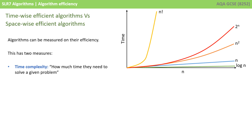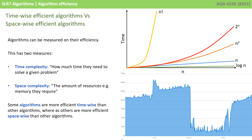When we talk about algorithm efficiency, especially beyond GCSE, we can measure efficiency in two ways. We have time complexity — that's how much time an algorithm needs to solve a problem — and we have space complexity — that's the amount of resources, e.g. memory, the algorithm requires to complete. Some algorithms are more efficient time-wise than others, whereas others are more efficient space-wise.